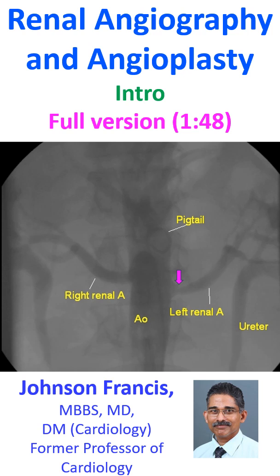Here is a descending aortogram with pigtail catheter showing both renal arteries arising from the aorta. The left renal artery shows narrowing in the proximal segment just after the ostium.